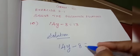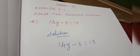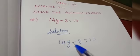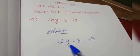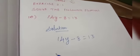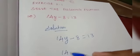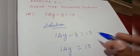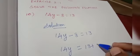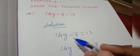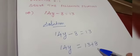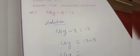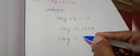14y minus 8, that is equal to 13. Here we cannot bring both 14 and 8 to the right side at a time. First we have to bring minus 8 to the right side; the next step we can bring 14 to the right side. So 14y is equal to 13, and this minus 8 becomes plus 8 on the right side. While we are bringing it to the right side, we have to put a minus symbol.